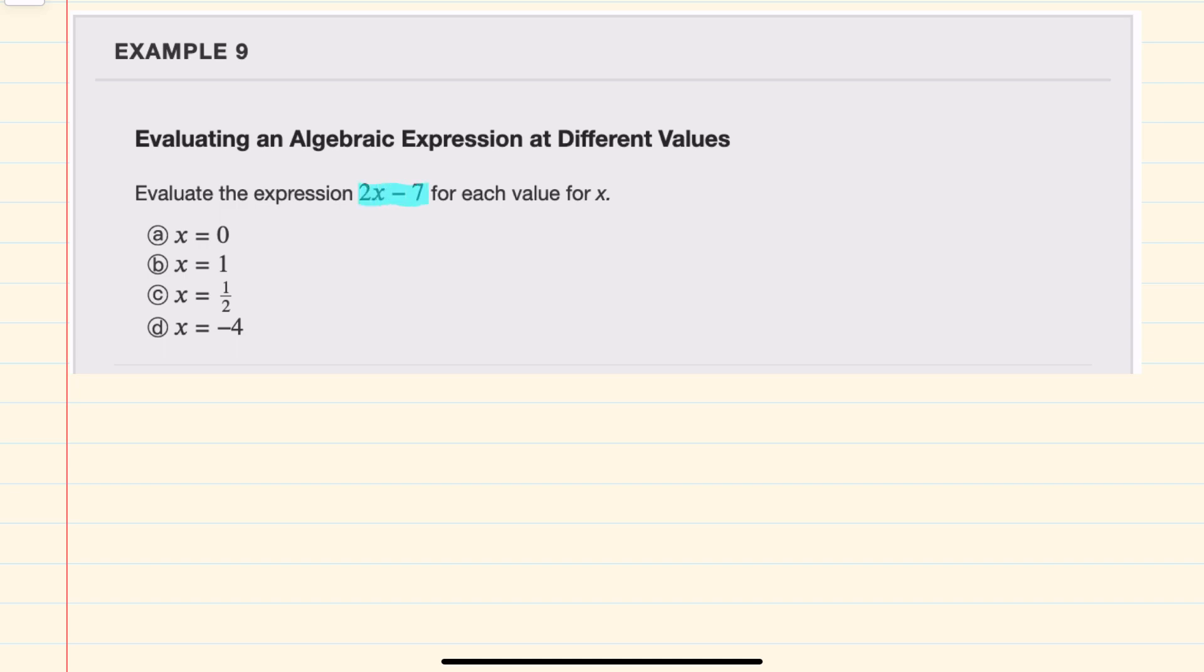We're given the expression 2x minus 7, and we're asked to evaluate it for different values of x.